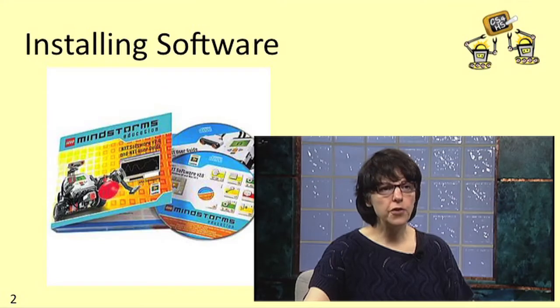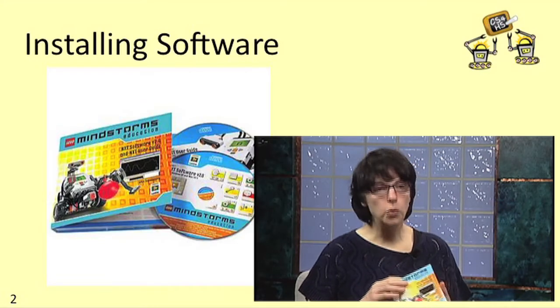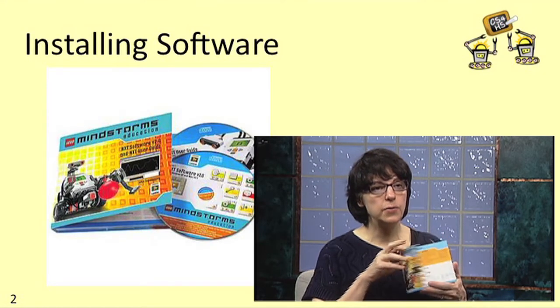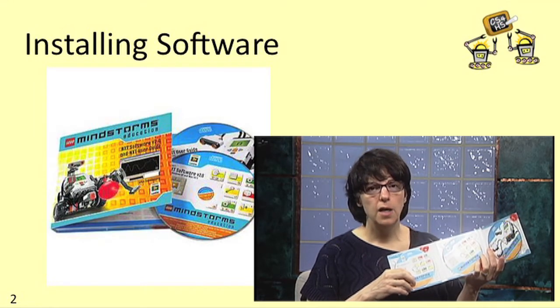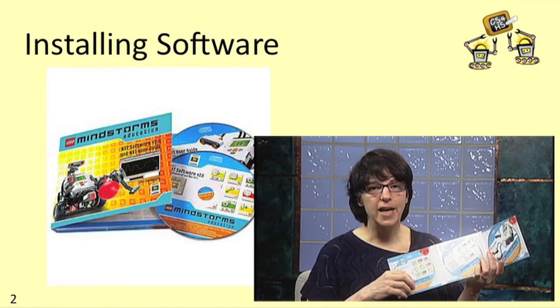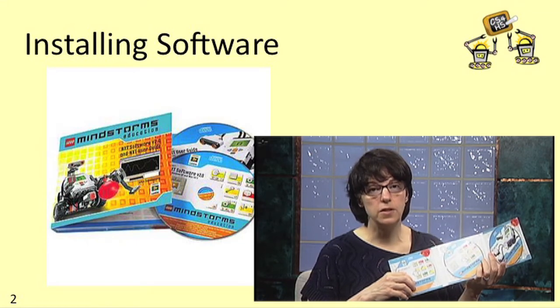If you bought the educational version of the kit, you will have had to buy the software separately from the kit. You can either buy one copy of the software for each computer you're going to be installing it on, or you can buy a site license that allows you to install the software on multiple computers at your school. The software comes in a tri-fold holder like this and contains three disks — one has the software to install on a PC, another for a Mac, and the third disk contains the user guide.